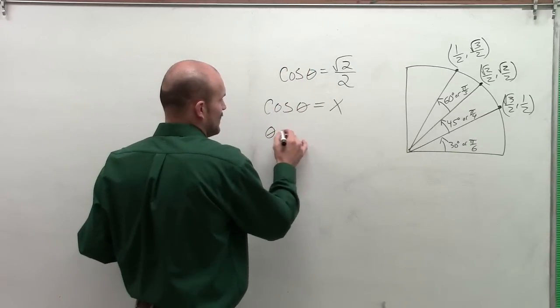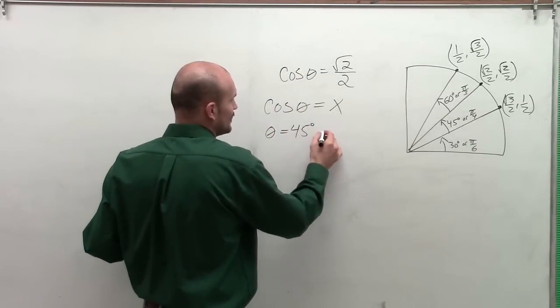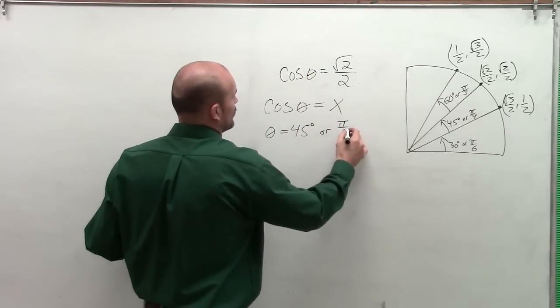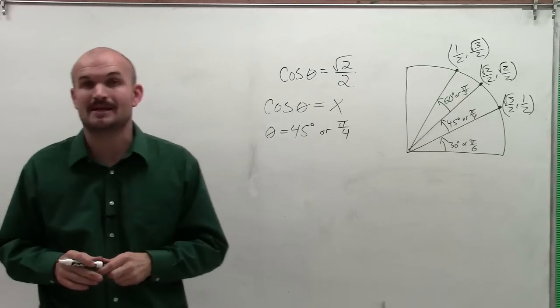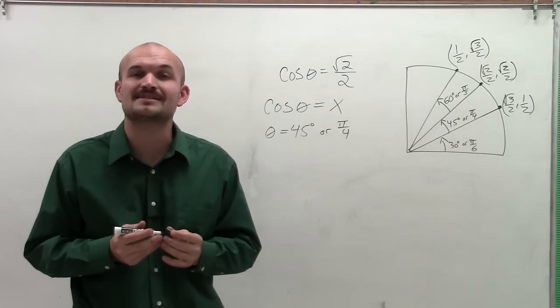So therefore, I can simply say that theta is equal to 45 degrees or pi over 4, pi over 4 radians. So that's how you find the angle in degrees and radians. Thanks.